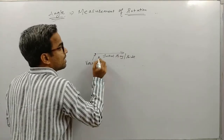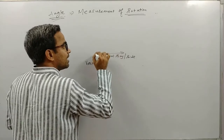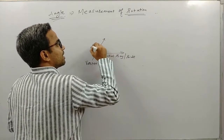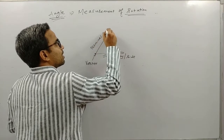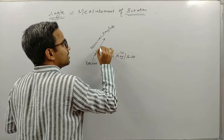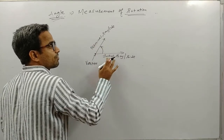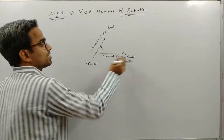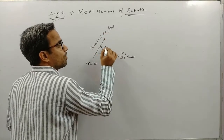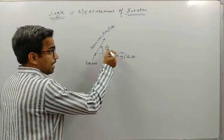An angle is the measurement of rotation — how much the initial ray rotates until it reaches a final position called the terminal ray or terminal side. So basically, the amount of rotation required to reach the terminal side when we start from the initial side is our angle theta.